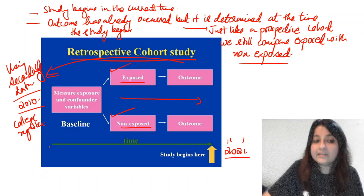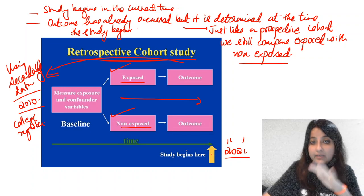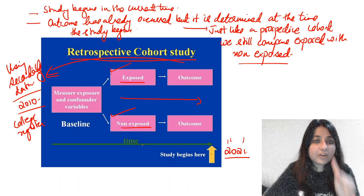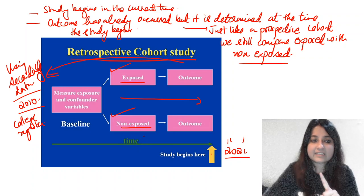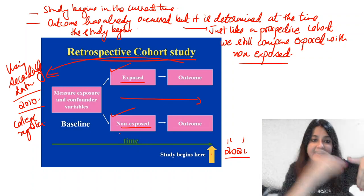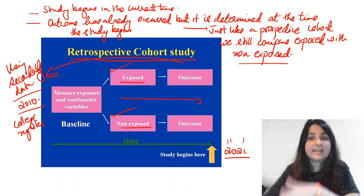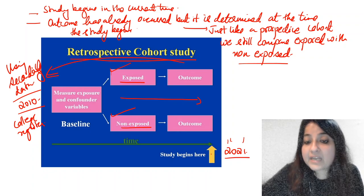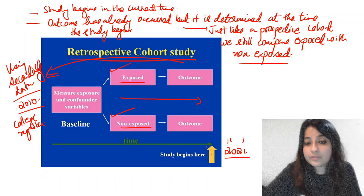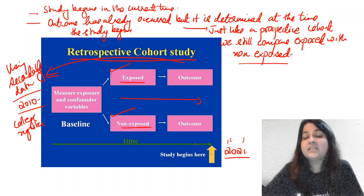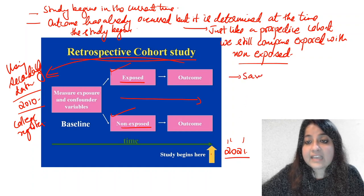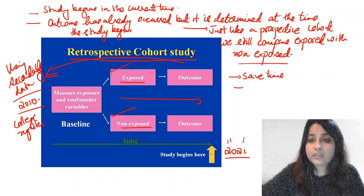When you look at the diagram, the yellow arrow direction tells you the study type. First, check: are you comparing cases and controls? If yes, it's case-control. If you are comparing exposed and non-exposed and starting at present time moving forward, it is prospective cohort. But if you start at present time, go back in time, divide into groups, and determine the outcome at the time the study begins — it is retrospective cohort. This saves time and money.